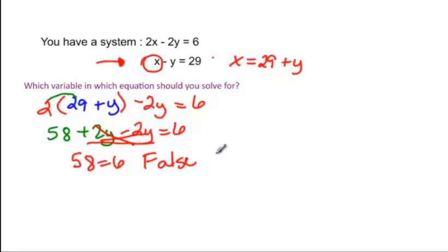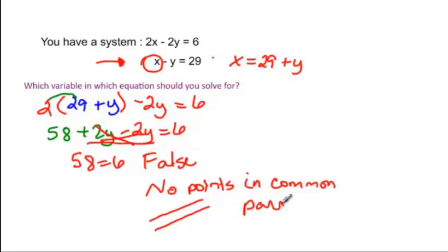So if we had a true statement and it was the same line, all points are in common, then if it's false, that would mean that they have no points in common. And if you remember, talking about special lines, if they have no points in common, that means that they never cross or they are parallel lines. And I would be fine with no solution.